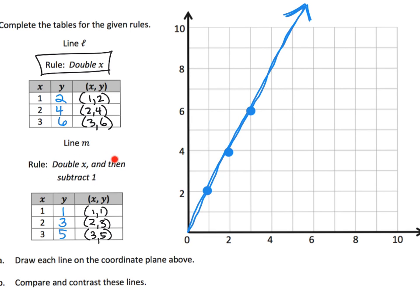Now for the second set of ordered pairs — let's do that in red to help us compare. We've got (1,1) right here, (2,3) right here, and (3,5) right here. When we graph that line, it doesn't go through the origin this time. So there are our two lines — line L in blue and line M in red. You can see they are parallel; only the blue one goes through the origin, while the red one does not.